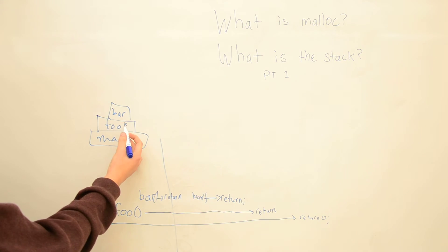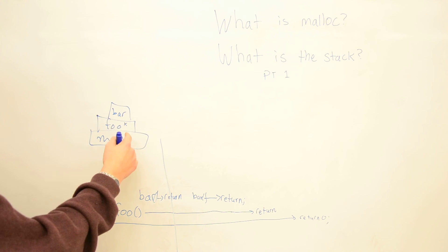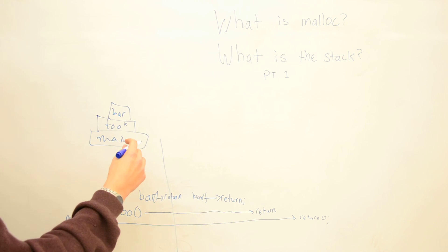This variable x can be used by everything on top of the stack, but it can't be used by anything on the bottom of it, anything below it on the stack. Why is that the case? I'll let you think about that for a while.